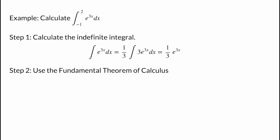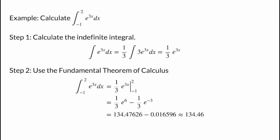The second step is to use the fundamental theorem of calculus. The integral from negative 1 to 2 of e to the 3x is just the change in our antiderivative at the two endpoints: 1/3 e to the 6, minus 1/3 e to the negative 3. Using high-precision calculations and rounding to 5 significant digits at the end, we get the approximate answer of 134.46.